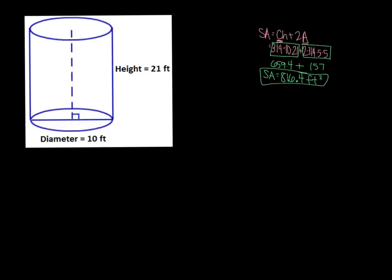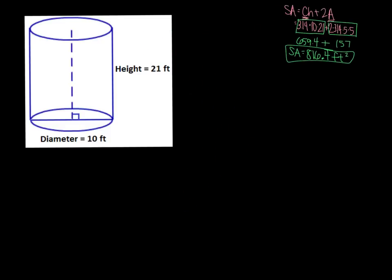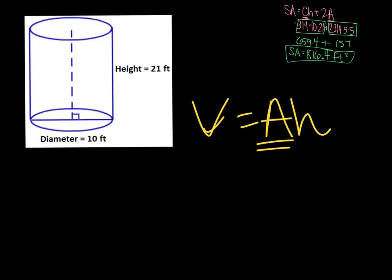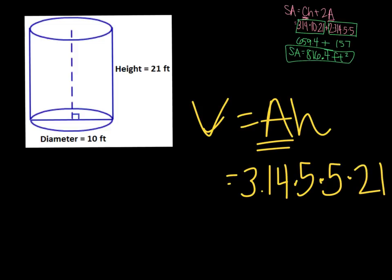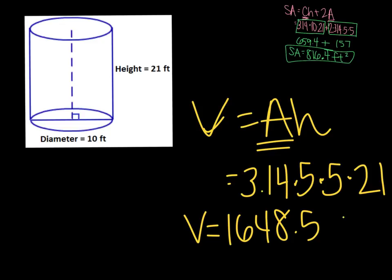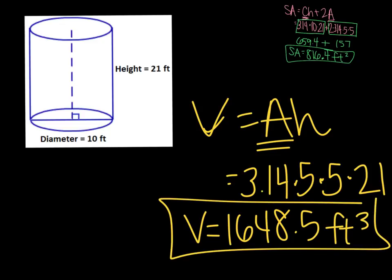Now we move on to volume. Remember, volume is V equals AH. A is π r squared, so we start with 3.14 times r, which is 5, times 5. Then don't forget to multiply by H at the end, so times 21. Type all that into your calculator and our volume ends up being 1,648.5 cubic feet.